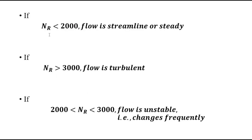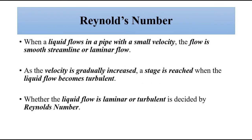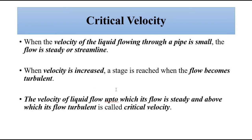There are three cases for Reynolds number. If the Reynolds number is less than 2000, the flow is streamlined or steady. If it is greater than 3000, the flow is turbulent. If the Reynolds number lies between 2000 and 3000, the flow is unstable — it is neither purely streamlined nor turbulent, and it constantly changes from one pattern to the other.